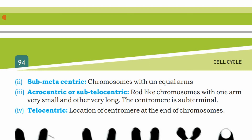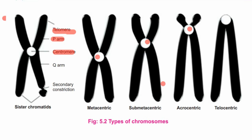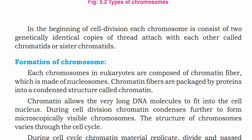Telocentric chromosomes have the centromere located at the end of the chromosome. In the beginning of cell division, each chromosome consists of two genetically identical copies of thread attached to each other, called chromatids or sister chromatids.